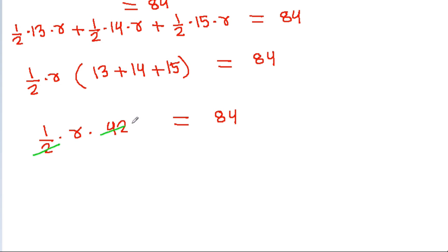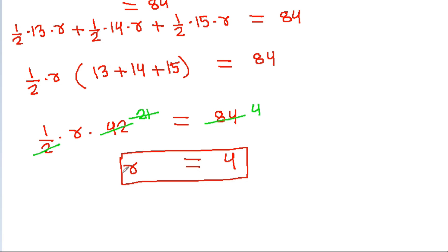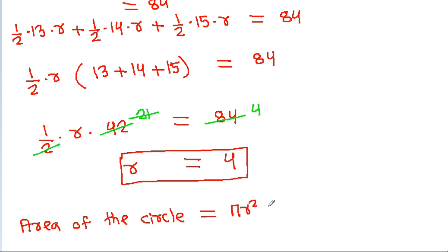And so 21 times R equals 84, giving R equals 4. Now, area of the circle equals pi times R squared equals pi times 4 squared, and it is 16 pi.